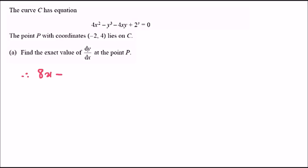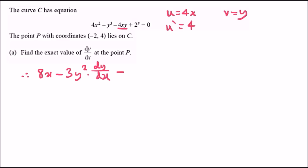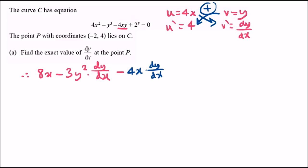Differentiating term by term: 4x squared gives 8x. For y cubed, drop the power to get 3y squared times dy over dx. For the product 4xy, apply the product rule with u equals 4x and v equals y: derivative is 4x times dy over dx plus 4y.